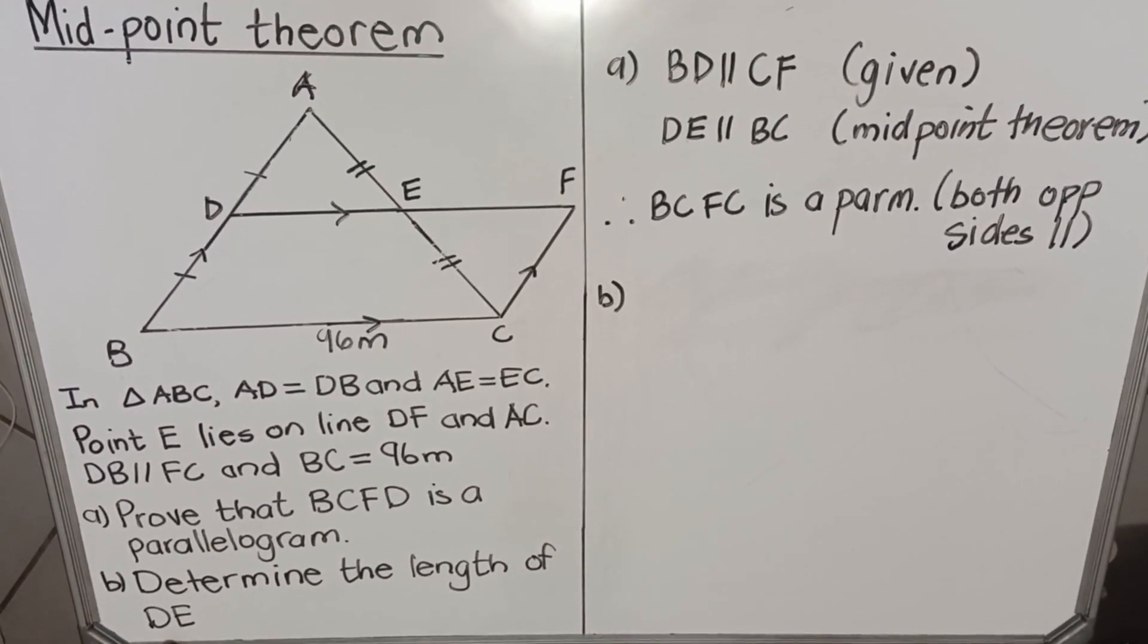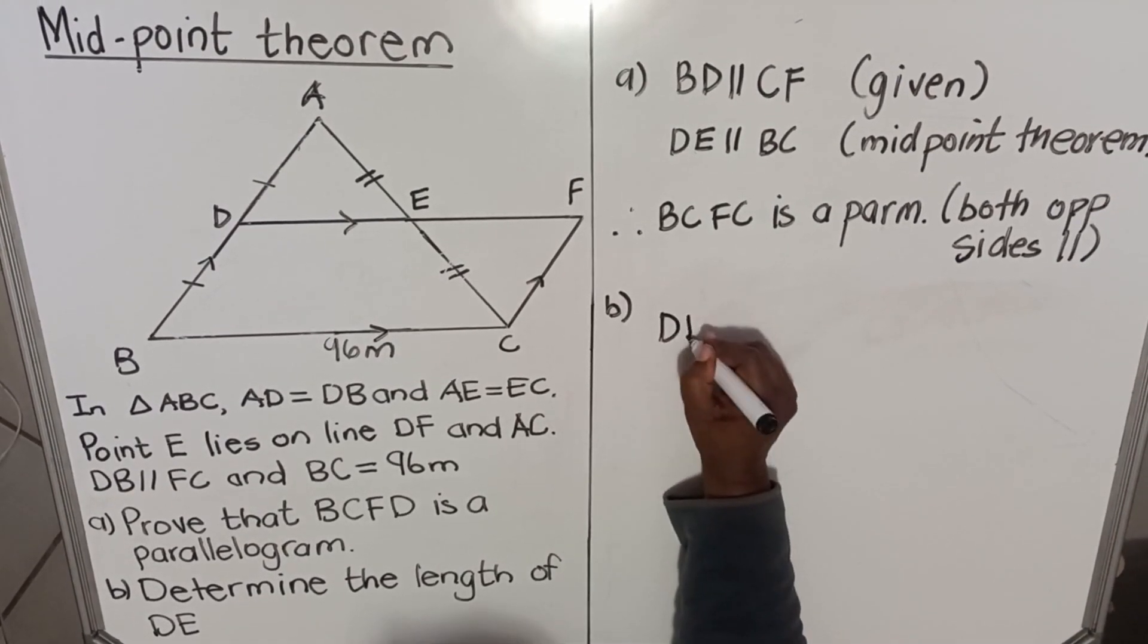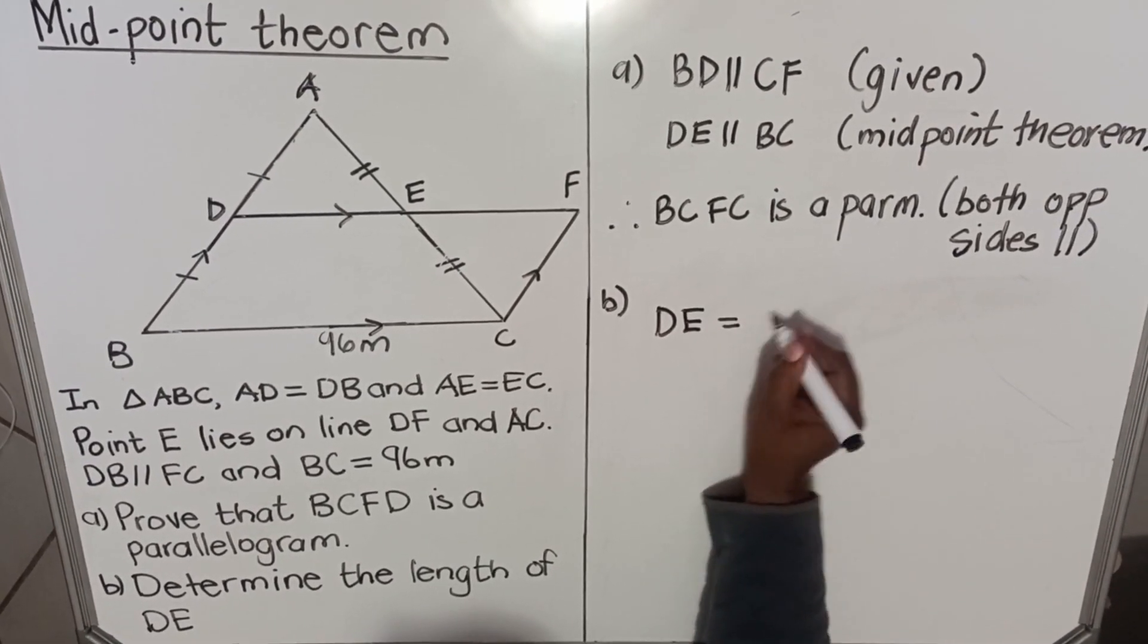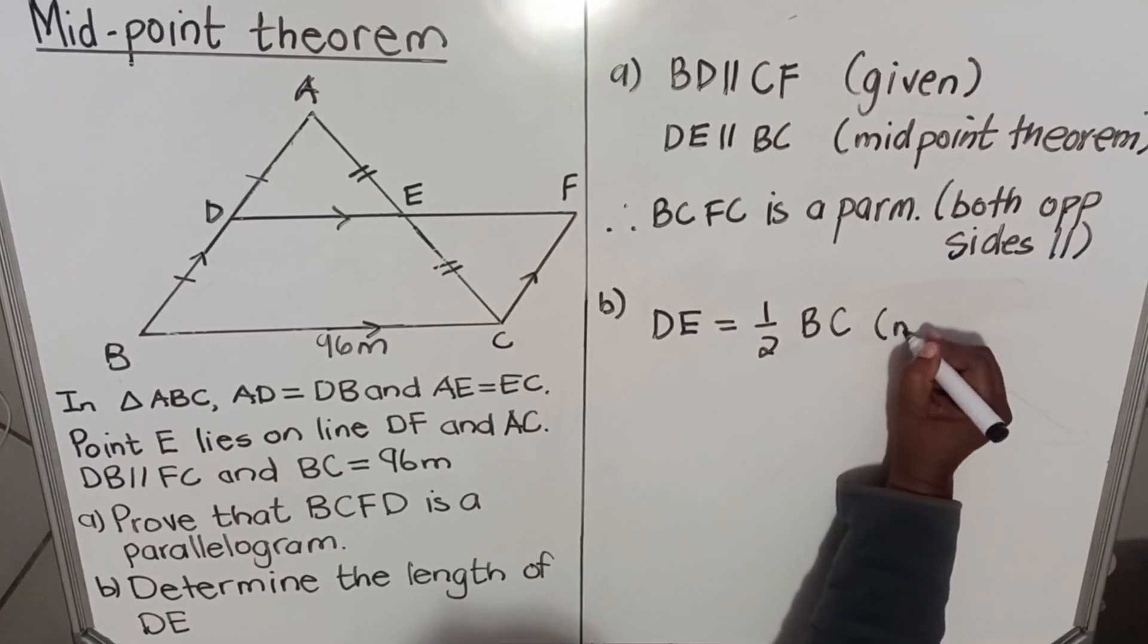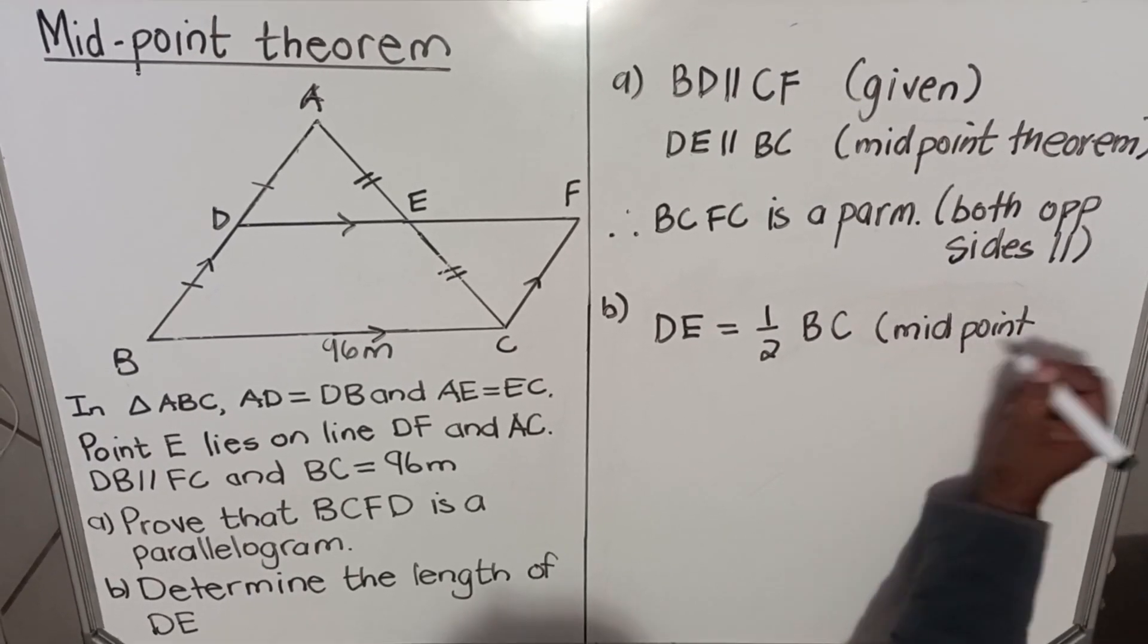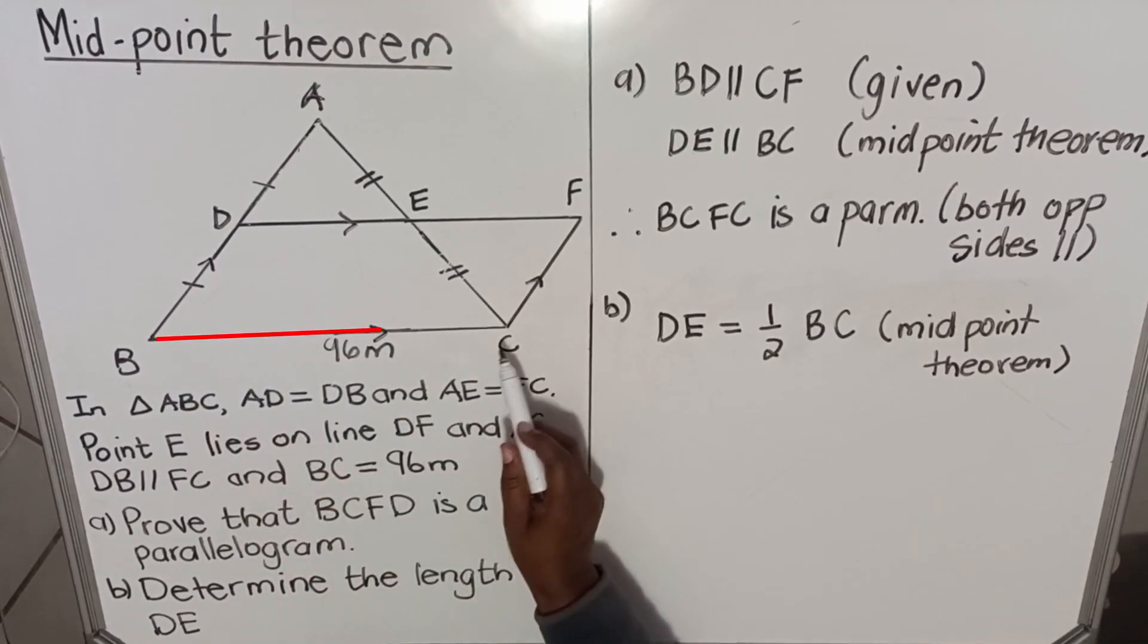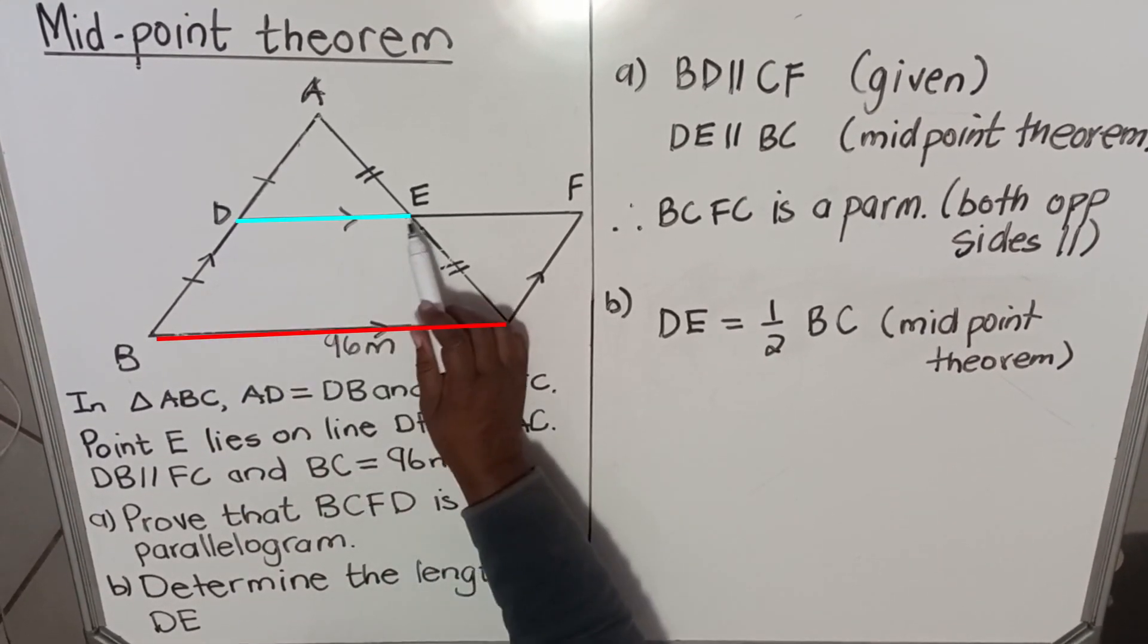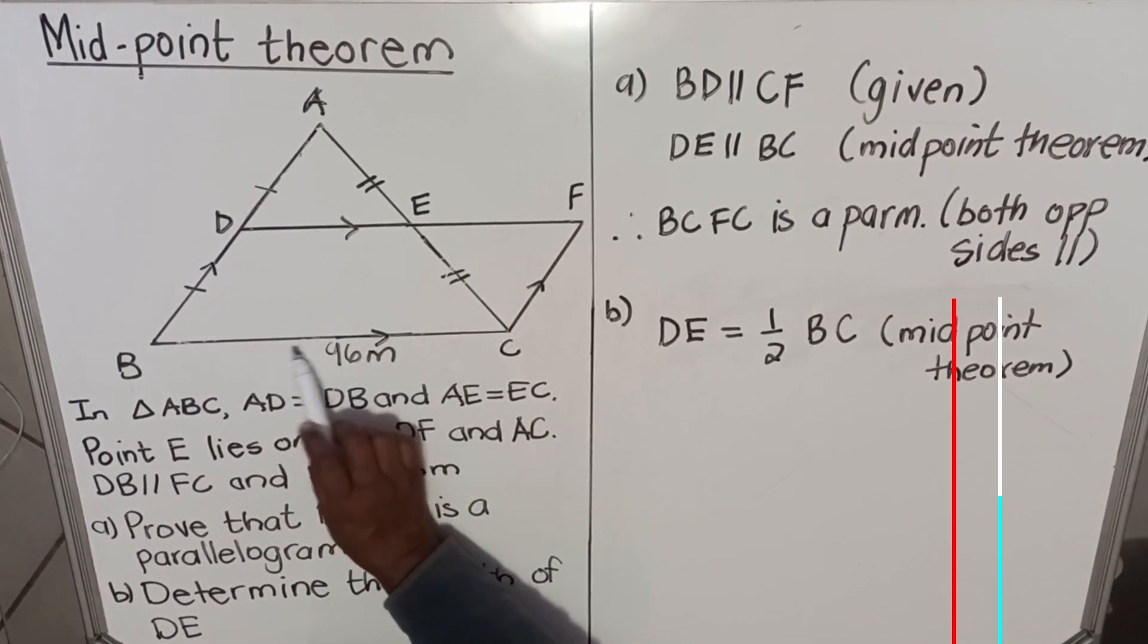Okay, part b: they say determine the length of DE. Now, DE according to midpoint theorem: DE is equal to half BC, and the reason is midpoint theorem.